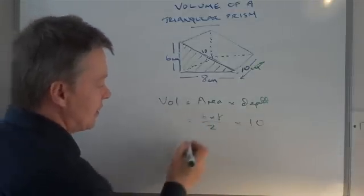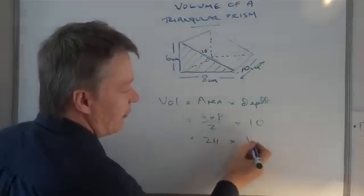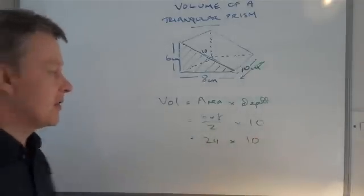So 6 times 8 is 48, divided by 2 is 24, times the depth of the unit, which is 10. Both of those are centimetres, so 240 centimetres.